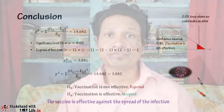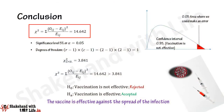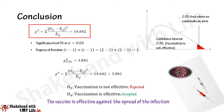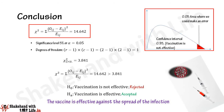The null hypothesis is that the vaccine is not effective, and the alternative hypothesis is that the vaccine is effective against the spread of the infection. Our calculated chi-square value is 14.642. The significance level is 5%, or alpha equals 0.05. This means we are 95% confident in claiming the vaccine is not effective, but for 5% we could make an error in claiming that the vaccine is not effective against the infection.